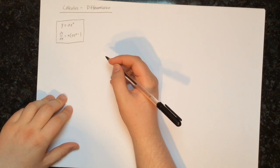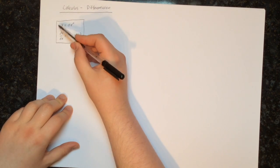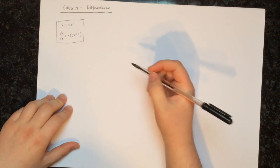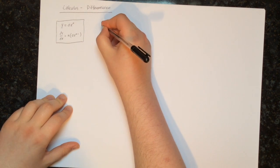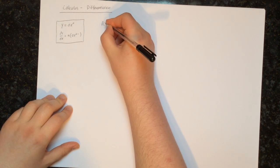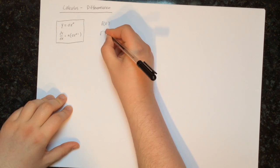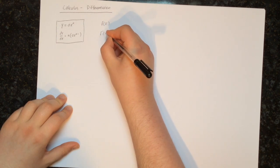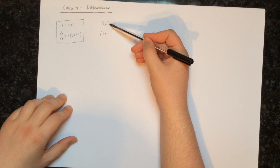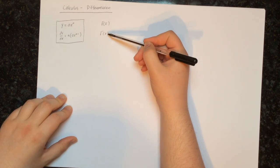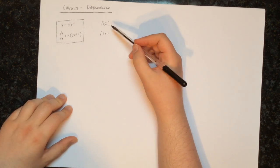What we're going to do differently in this video is, instead of using this notation with y and dy/dx, we're going to start talking about it as f of x and f dash of x. This means exactly the same thing — f of x is the name of the function and f dash of x is the derivative.